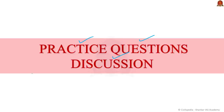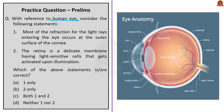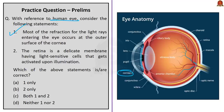We have come to the last session — the practice questions. With reference to the human eye: most of the refraction for light entering the eye occurs at the outer surface of the cornea — this is correct, as the transition from air into the cornea marks the largest change in refractive index, with around 80% of refraction occurring in the cornea and about 20% in the inner crystalline lens. The retina is a delicate membrane having light-sensitive cells that get activated upon illumination — also correct. Therefore, the correct answer is option C, both 1 and 2.